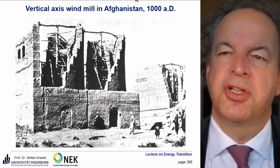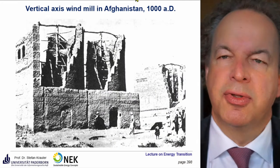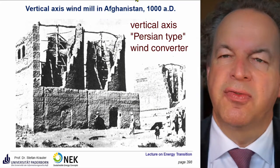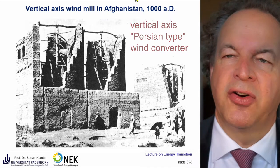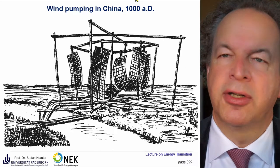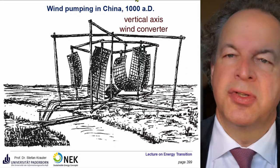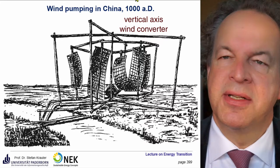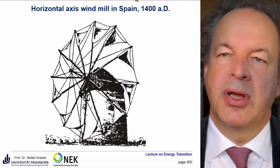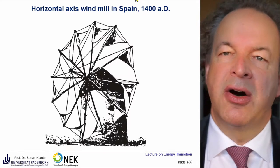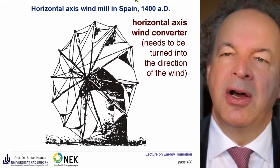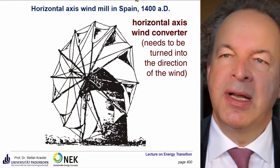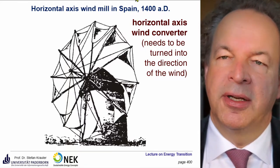The use of wind energy is rather old. Since thousands of years, wind energy has been used for grinding corn and for lifting water. Here you see a pumping system, a wind power pumping system in China. Here you see a horizontal axis windmill from Spain, a typical Don Quixote windmill, from 1400 Anno Domini.